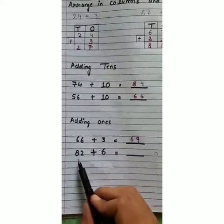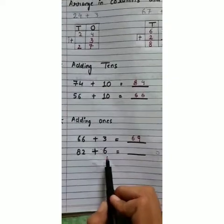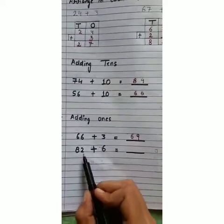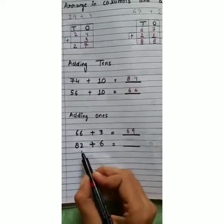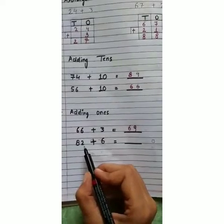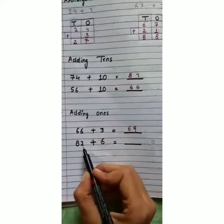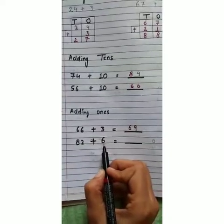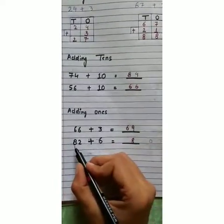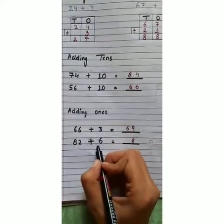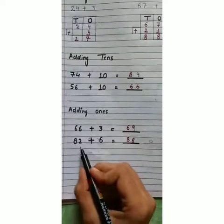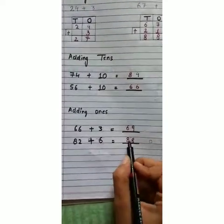Take a second example: eighty-two plus six. Six is at one's place. In eighty-two, two is at one's place and eight is at tens place. We will add the one's digit with one's digit: two plus six is eight. There is no tens digit to add for six, so we write eight as it is. Eighty-two plus six is equal to eighty-eight.